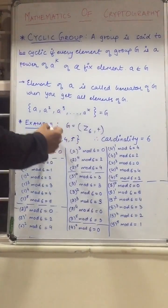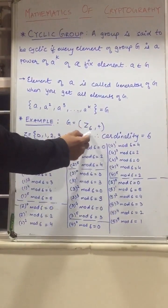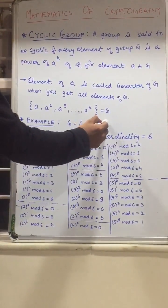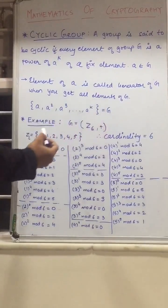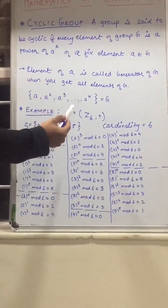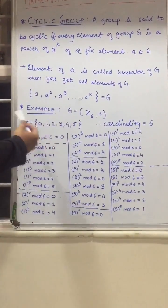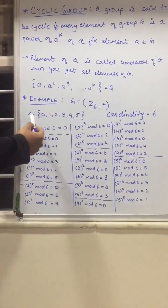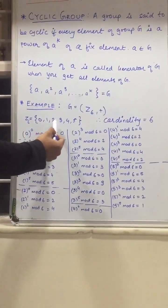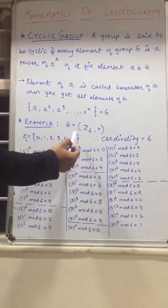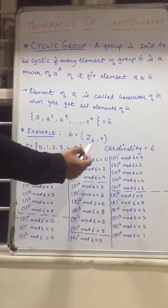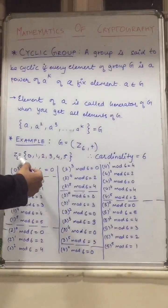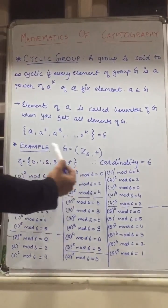Let's take one example where G is equal to Z6 and the binary operator is addition. In the first tutorial I taught you how to find Z6. Z6 is equal to {0, 1, 2, 3, 4, 5}, and its cardinality is 6 because the number of elements in Z6 are 6.